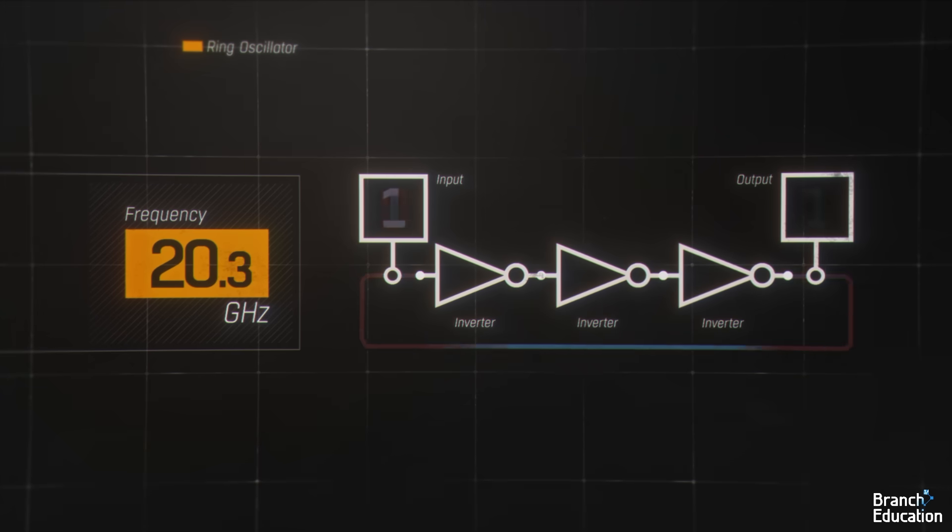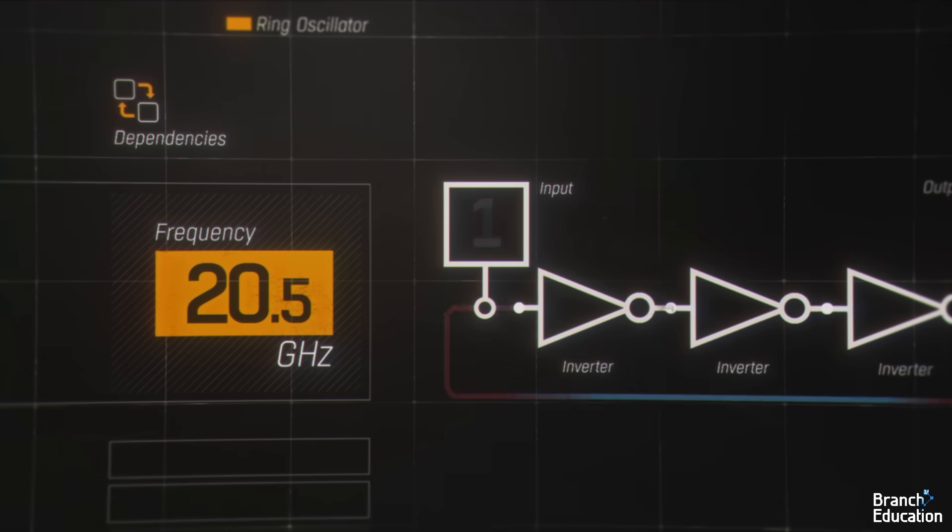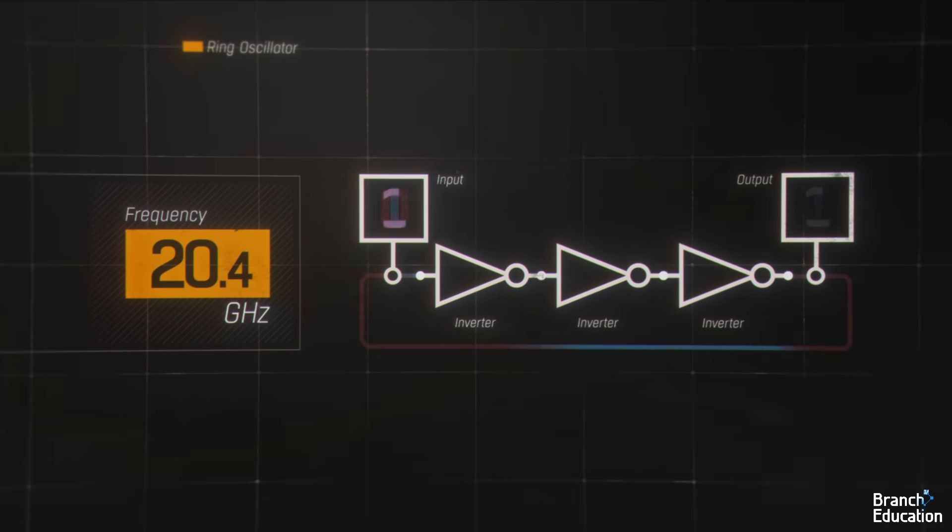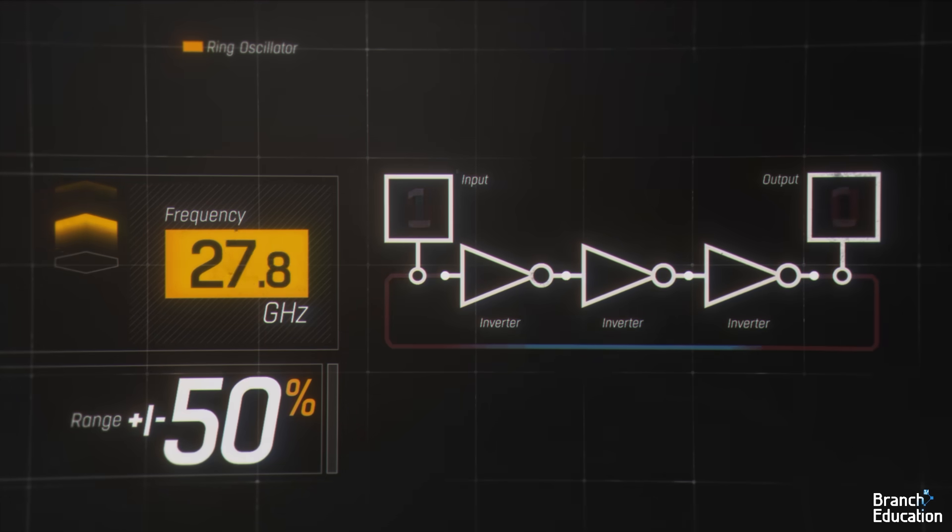These inverters can operate incredibly quickly and can easily reach the gigahertz frequency range and higher. However, the issue is that this ring oscillator's frequency is highly dependent on temperature, as well as the physical geometry and electrical properties of the transistors, and thus has a frequency range of plus or minus 50% or more from the desired frequency.